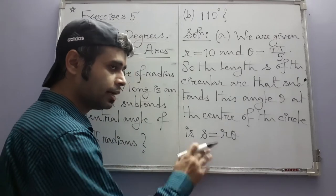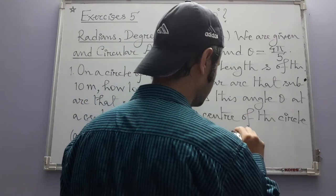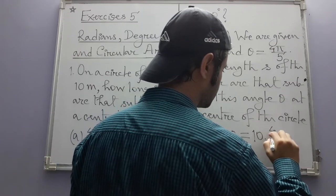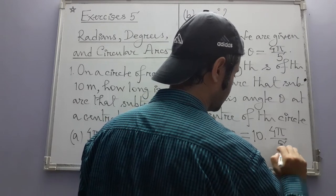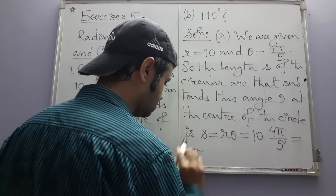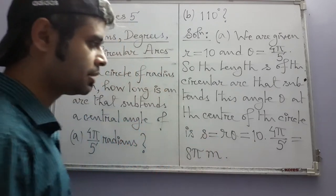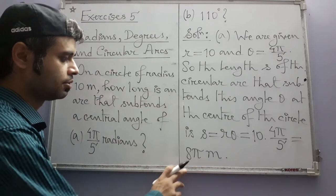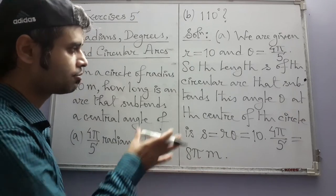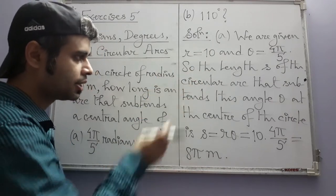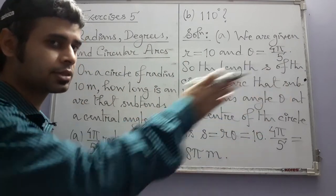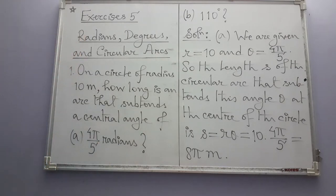In part a, r is 10 and the angle is 4π/5. So s = rθ = 10 × (4π/5) = 8π meters. The circular arc should be of length 8π meters in order to subtend this precise angle at the center of a circle whose radius is 10 meters.